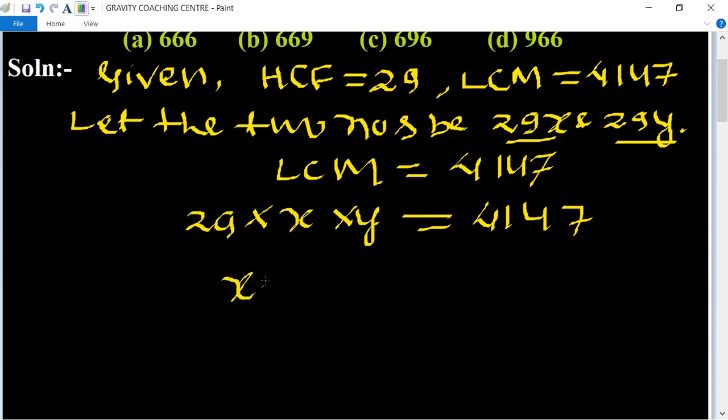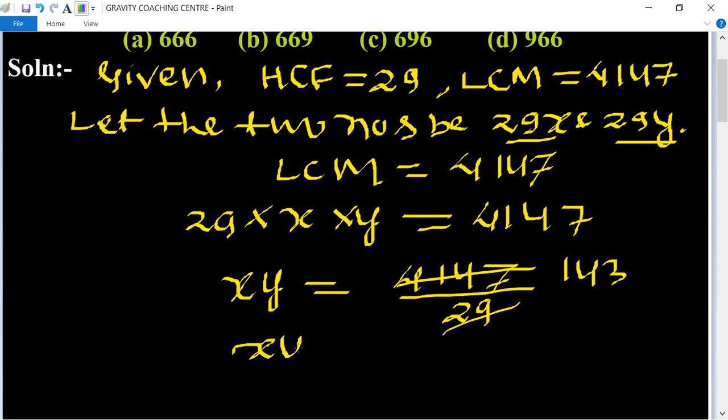So xy equal to 4147 upon 29, and it is cancelled by 143. So x into y equal to 143. So now we find the coprime of 143.